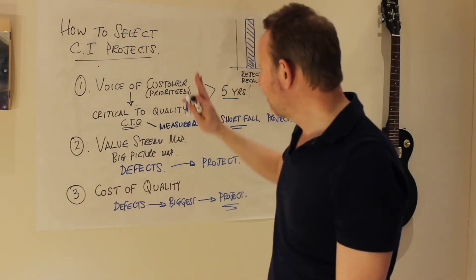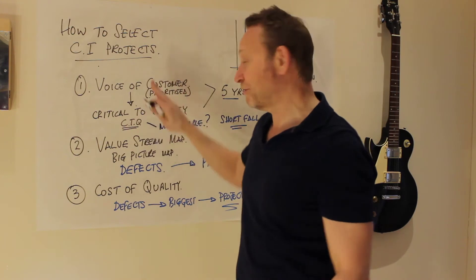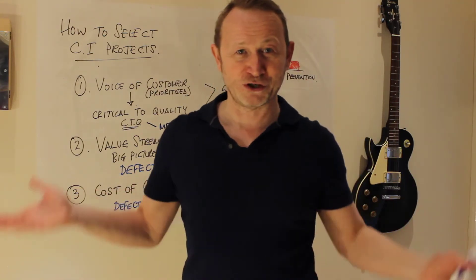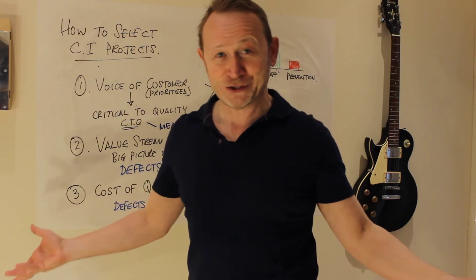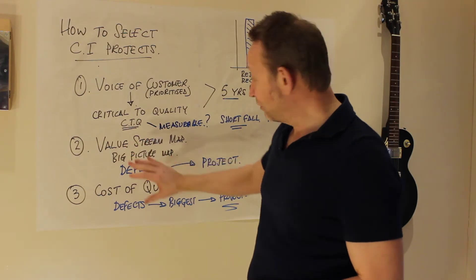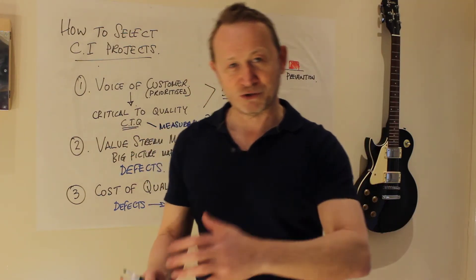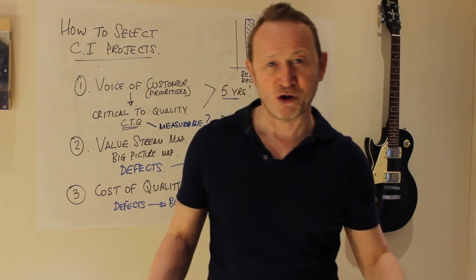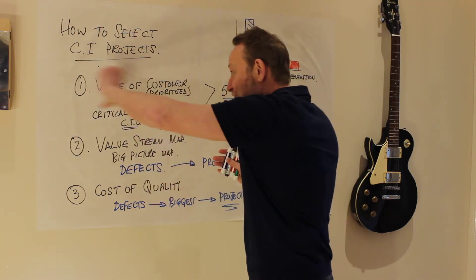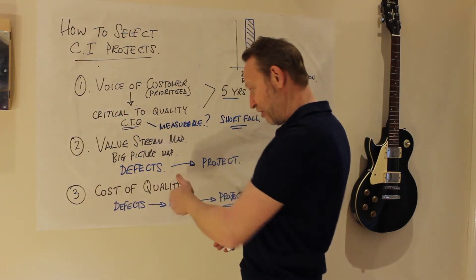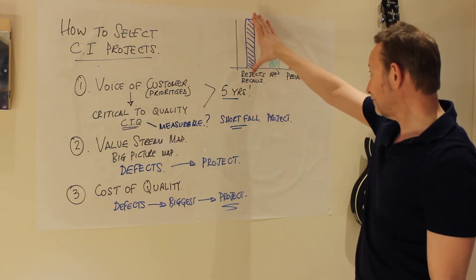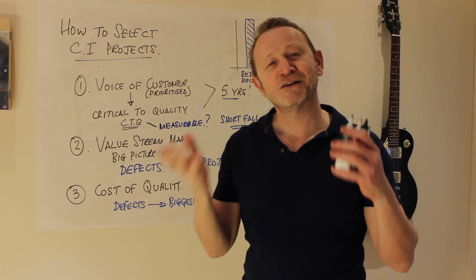The voice of the customer method is the correct way to start the whole process of designing a new product or service right from the beginning. If you get a prioritized list of customer needs, you'll please the customer and make piles of cash. The big picture map is the lean way and a great approach — there are lean projects around pull systems, stock control, planning systems, and setup time reduction. But a simple way to start is to look at the cost of quality: where is the money — is it in prevention or in firefighting? Reverse the shape of that diagram and that's how you pick projects.